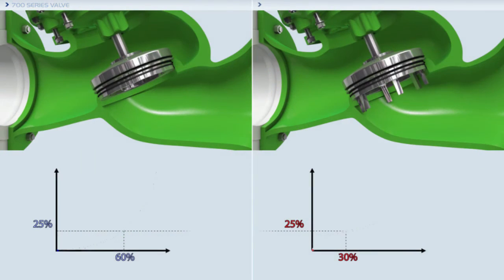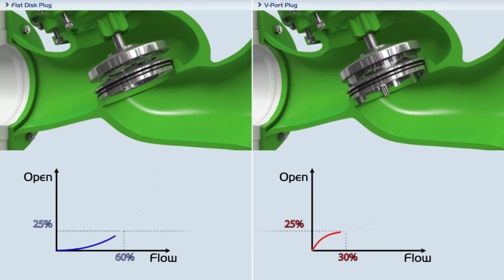The V-port plug changes the ratio of flow to stem travel, making the stem travel longer than the flat disc for the same flow.